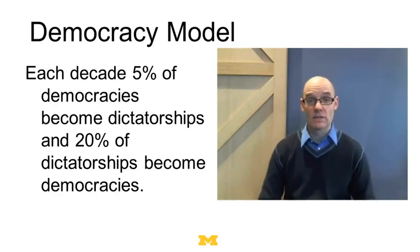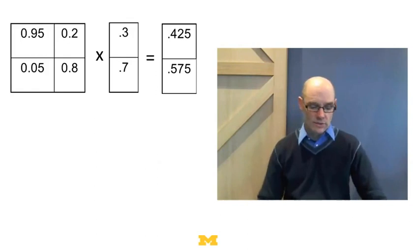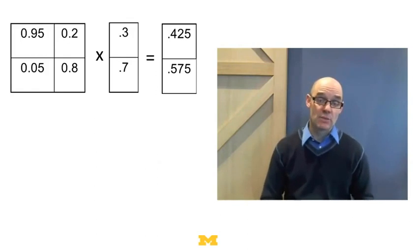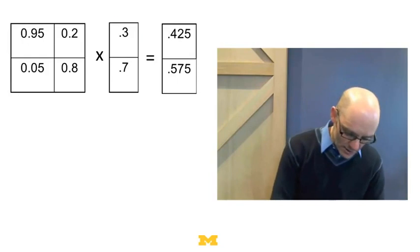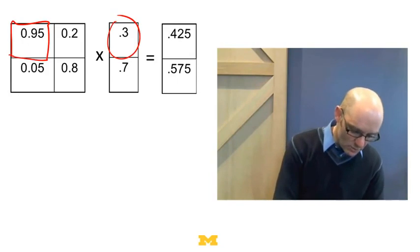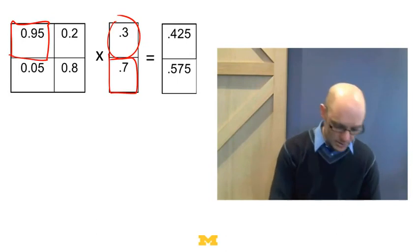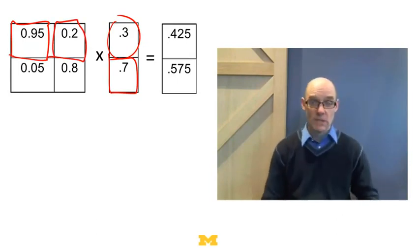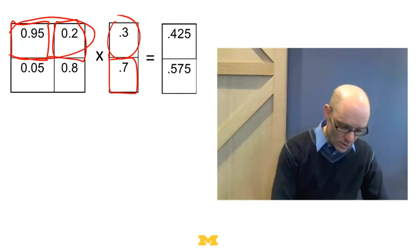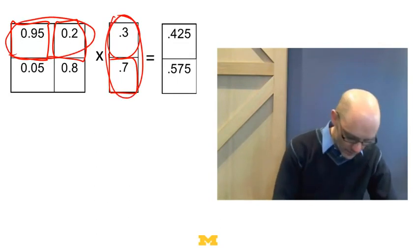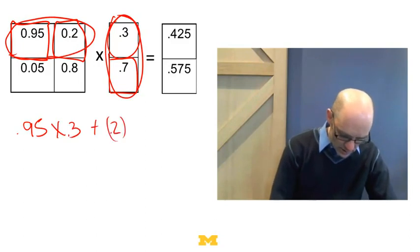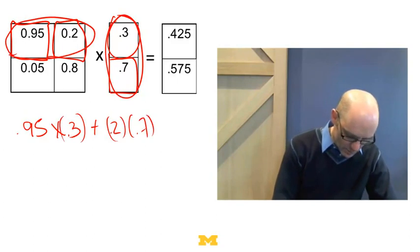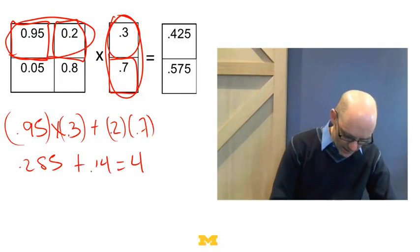Let's just walk through the logic. We're going to write down a Markov transition matrix. Let's start out by assuming we have 30% of countries that are democracies and 70% are dictatorships. Of this 30% that are democracies, we know that 95% will stay democracies. Of the 70% that are dictatorships, only 20% will become democracies. So to figure out how many democracies next time, we just take this row and multiply it by this column. So we get .95 times .3 plus .2 times .7. This is going to be .285 and this is going to be .14, and that gives us .425.